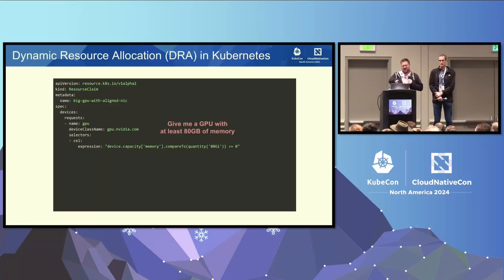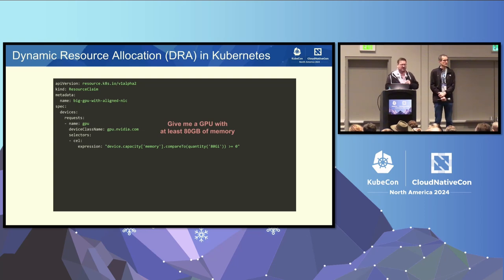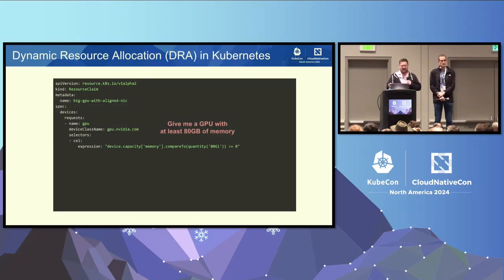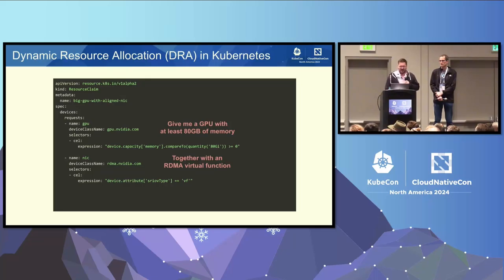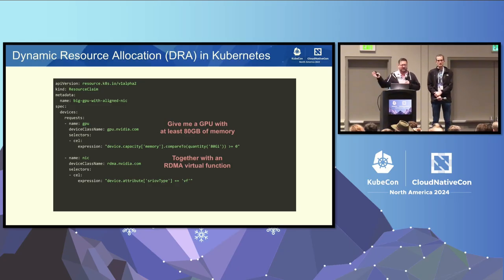With DRA, this is a resource claim. This particular resource claim is saying: give me an NVIDIA GPU with at least 80 gigs of memory. This gives you a flavor of how, whereas with the device plugin we just say we want one GPU, here we can actually provide criteria — either making it more precise or less precise. This is under-specifying the GPU so that if there are different GPUs with that much memory available, we could be assigned any one of them. Along with that, we can add a second request for a NIC — in this case, give us an RDMA VF.